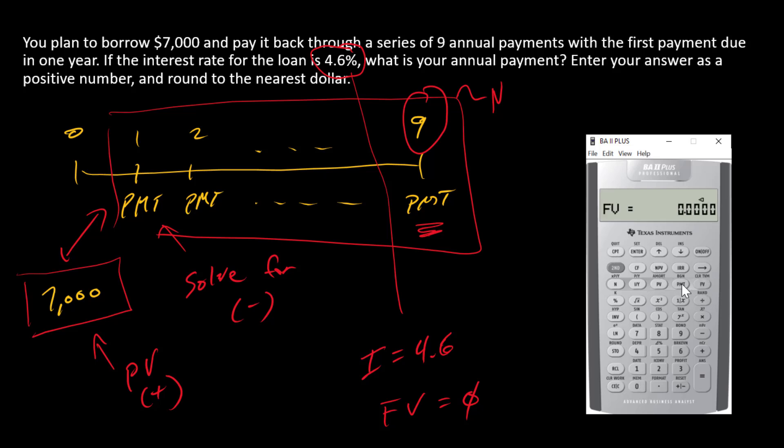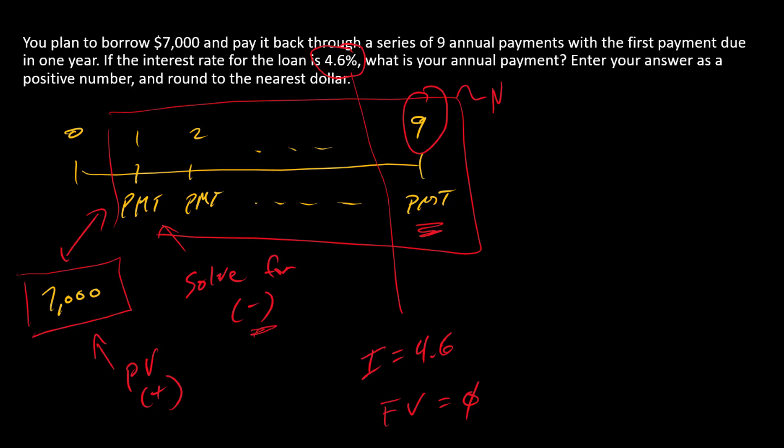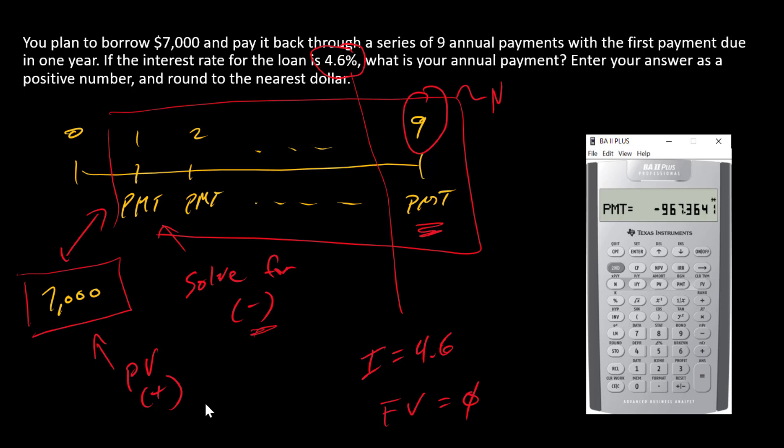I can compute my payment. So CPT. Payment equals $967.36. It is negative as we expected it to be. But of course, when I ask you for a loan payment, you need to give me back a positive number.